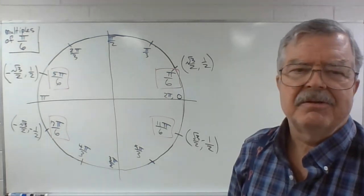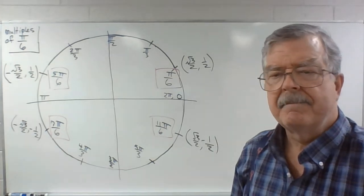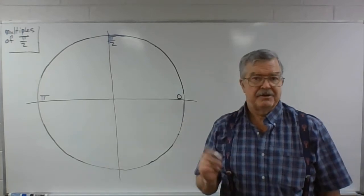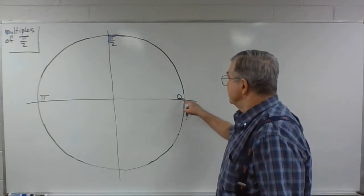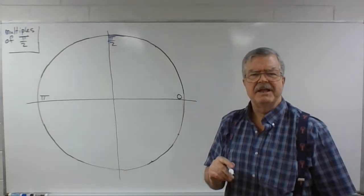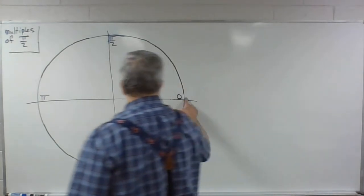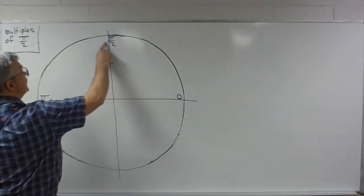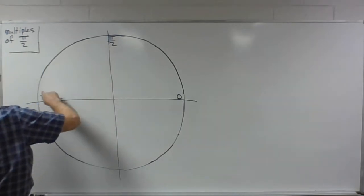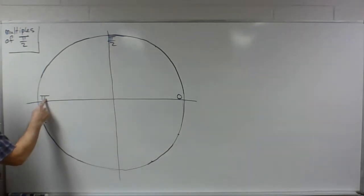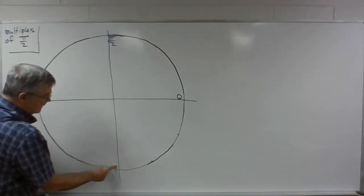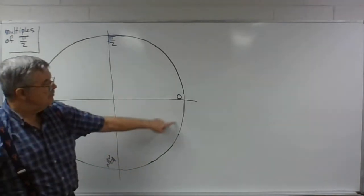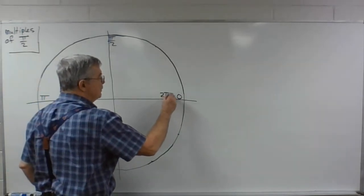Have I ignored some angles? I'll get to that in just a minute. The multiples of pi over 2 — this is where the x and y axes intersect the unit circle. Pi over 2 is the same as 90 degrees. If we start here and go pi over 2 or 90 degrees we wind up at the top. We go another distance of pi over 2 and get 2 pi over 2, which is pi. We go pi over 2 again and wind up at 3 pi over 2, and then once more to get 4 pi over 2 or 2 pi.